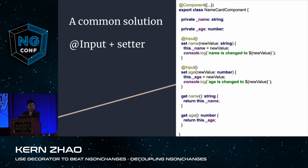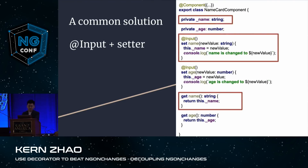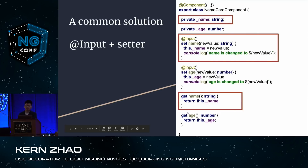I've seen a lot of people using the solution of combining a setter with @Input, and it works. For one input property, you need three pieces: at the top, a private variable to store the current value; at the bottom, a getter function simply returning the private variable; and a setter function sitting together with the @Input decorator.